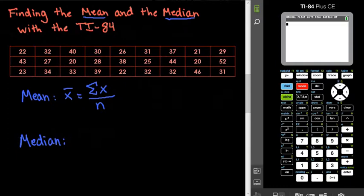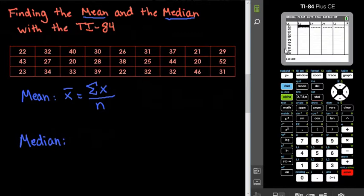For this, we're going to put all of this information into a list. So remember to get to that we hit the STAT button and under STAT we choose EDIT. I have already entered all of the information into L1.